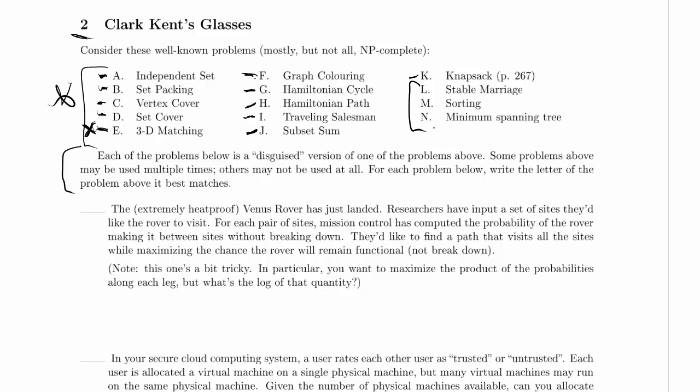Stable marriage, sorting, and minimum spanning tree are not NP-complete — we have polynomial time solutions for all of them. In stable marriage, you have n men and n women, each with a complete preference list over the other group, and the problem is to produce a matching with no instabilities. An instability would be two couples where each person would prefer the other's partner — where they'd rather run off with each other than stay with their spouses.